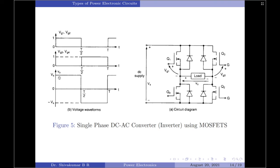Looking at the output voltage waveform, the output is positive and equal to Vs for half of the switching duration, and negative and equal to minus Vs for the remaining half. Therefore, we have associated a frequency into the output voltage, and thus this can be considered an AC voltage.